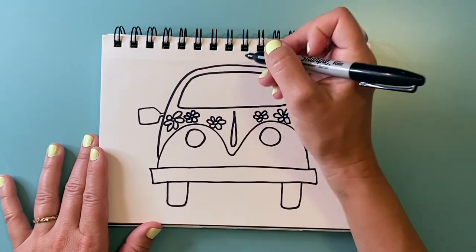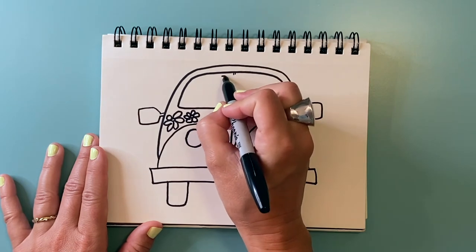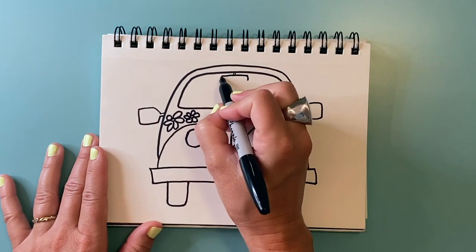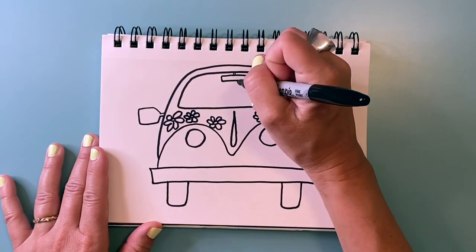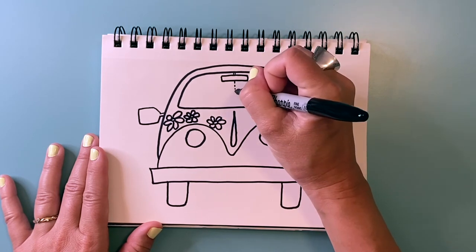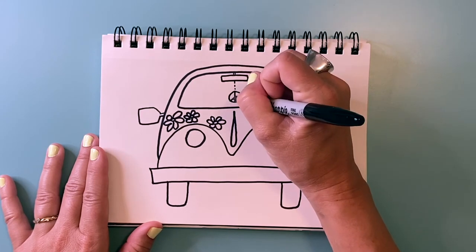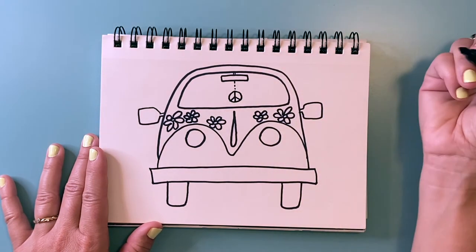And oh, I need to make a rearview mirror coming down from the top. So I'm gonna make kind of a long rectangle here. And then I'm gonna add a dangly peace sign coming down, hanging from the rearview mirror. There's my peace sign.